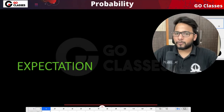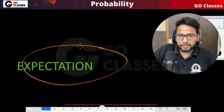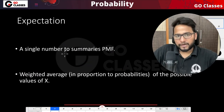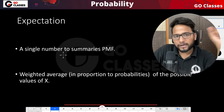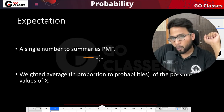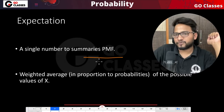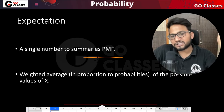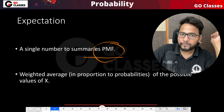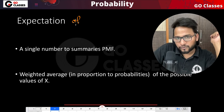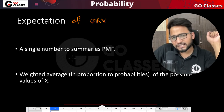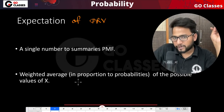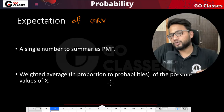Let us now start with one of the most popular topics: expectation of a random variable. Expectation is just one number that summarizes the whole PMF — probability mass function. We are first studying this with respect to the discrete random variable. It is a single number that summarizes the whole PMF, and in other words, it is a weighted average in proportion to the probabilities of the possible values of x.